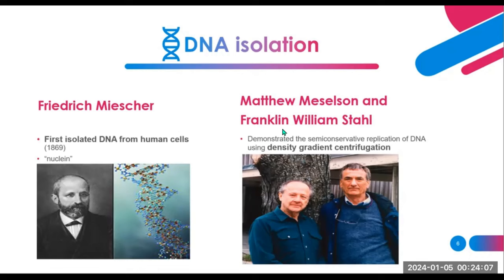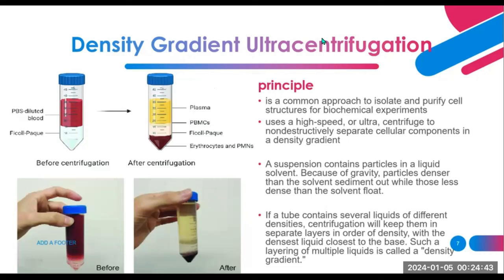Matthew Meselson and Franklin William Stahl conducted groundbreaking experiments in 1958 that provided compelling evidence for the semi-conservative replication of DNA. The DNA samples were subjected to density gradient centrifugation — a technique that separates molecules based on their buoyant densities. In this case, the density gradient was created using cesium chloride. Density gradient ultra-centrifugation is a commonly employed method to extract and refine cellular structures for biochemical studies, involving the use of a high-speed or ultra-centrifuge that facilitates gentle separation of cellular components without causing damage.